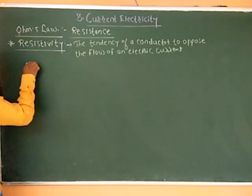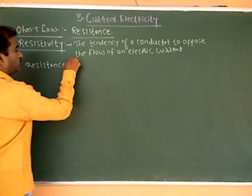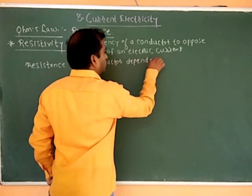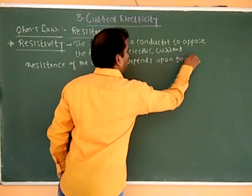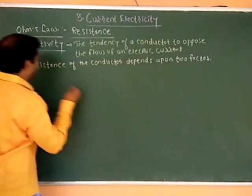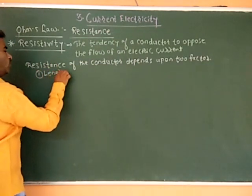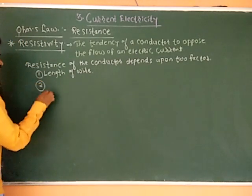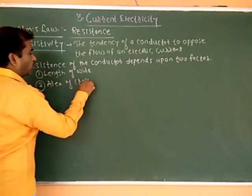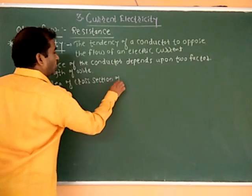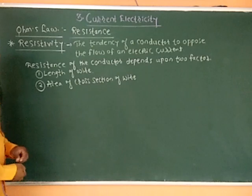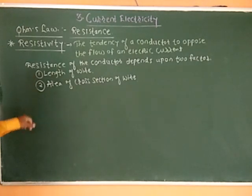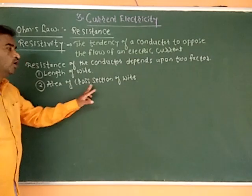The resistance of the conductor depends upon two factors. The first factor is the length of the wire, and the second factor is the area of cross-section of the wire.